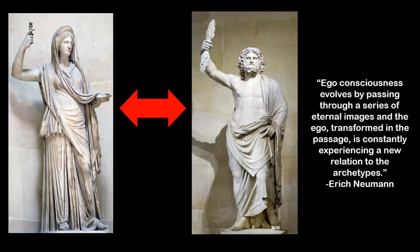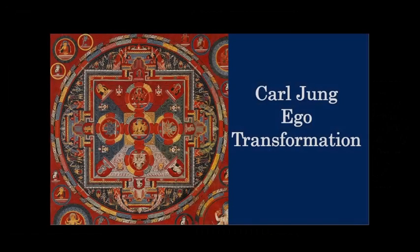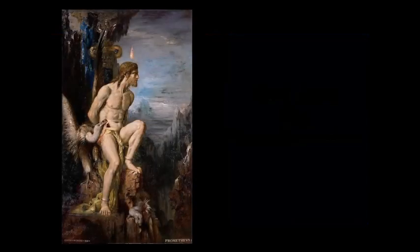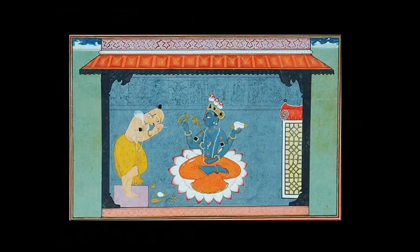We will get into the specific stages of this archetypal transformation in later videos, as this process is the main topic of this book. In The Origins and History of Consciousness, Eric Neumann shows how this process can be found in the mythologies of ancient cultures. As Carl Jung remarks in The Archetypes of the Collective Unconscious, myths are first and foremost psychic phenomena that reveal the nature of the soul. It may seem at first that myths have nothing to do with psychology, but myths are a product of the human mind, and so we can gain an understanding of the mind by examining the themes and images present in mythology.